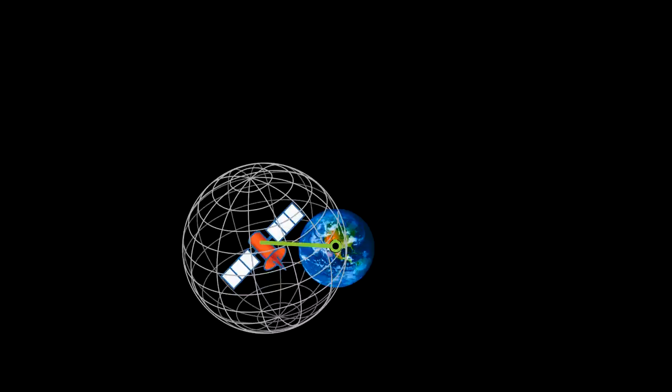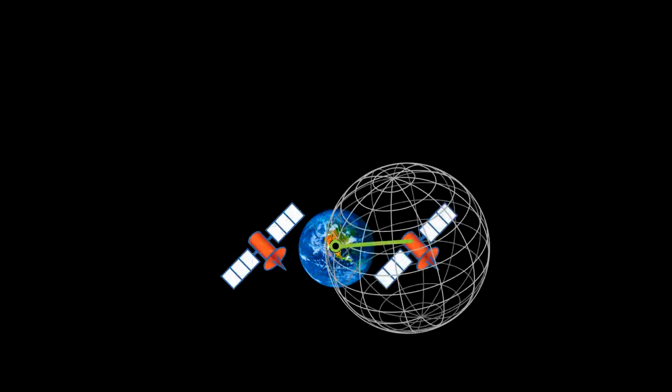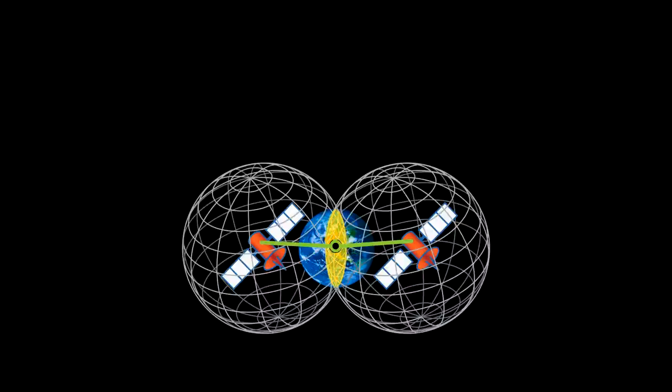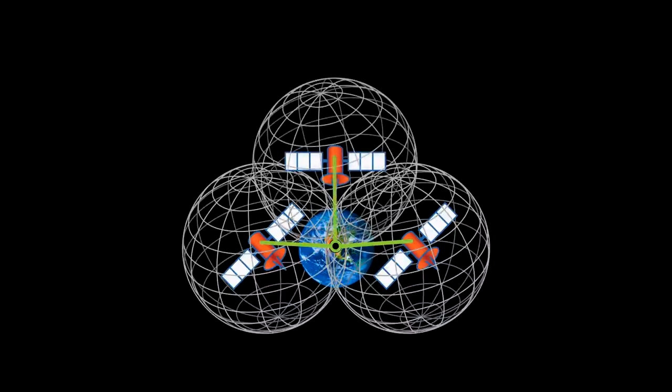It does the same calculation with the second satellite. The intersection of these two spheres narrows the location to the circumference of a circle. Then with the third satellite, the receiver can reduce the location to a single point.